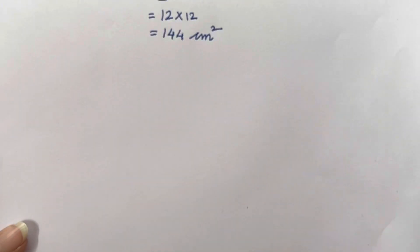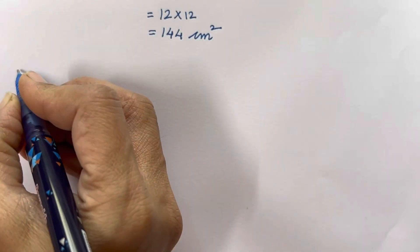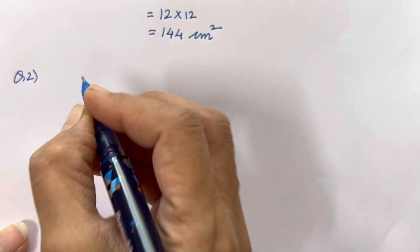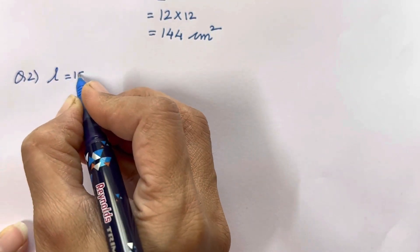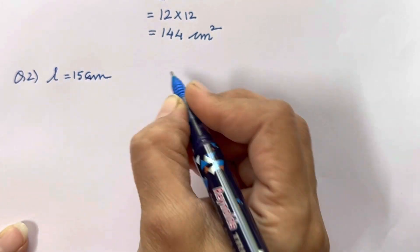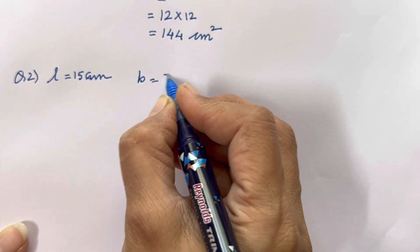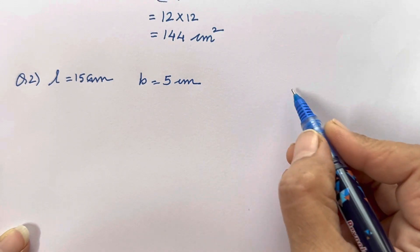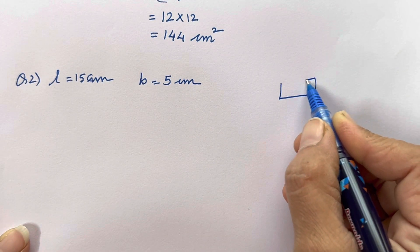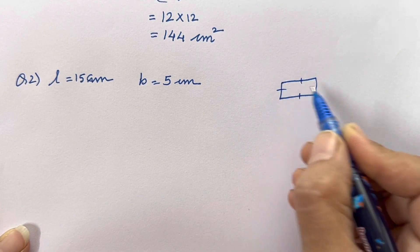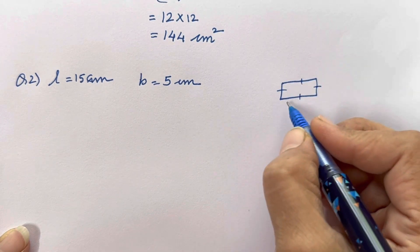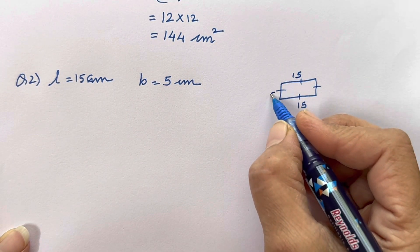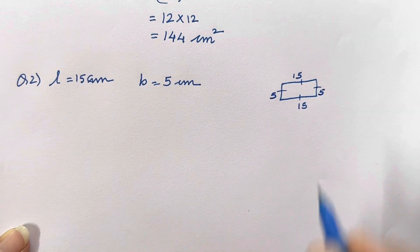Let's move on to the next question — question number 2. The length of the rectangle is 15 centimeter and breadth is 5 centimeter. Find its area. Now we all know the property of a rectangle: the two opposite sides are equal. So length is 15, that means this side will also be 15; if breadth is 5, this side will also be 5.